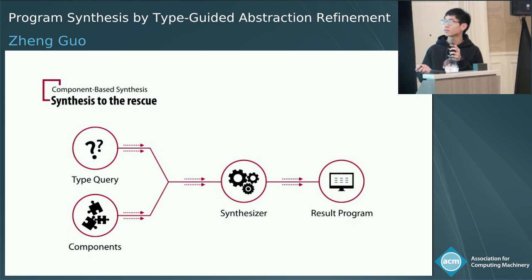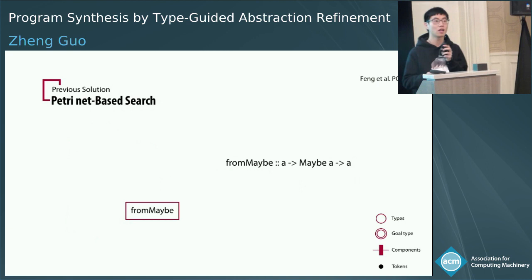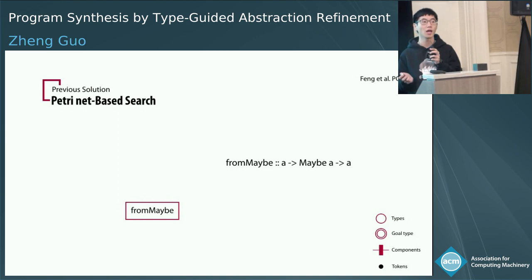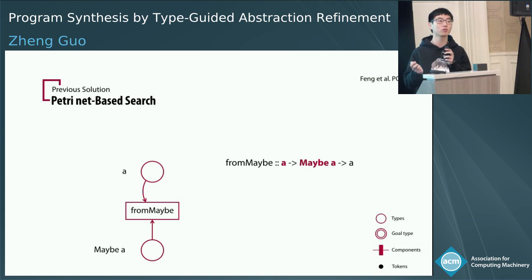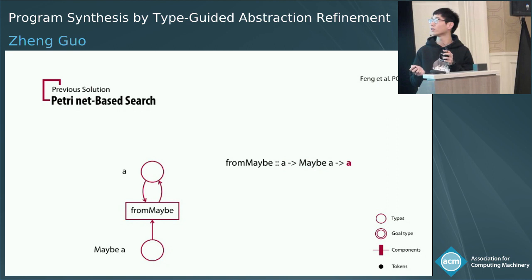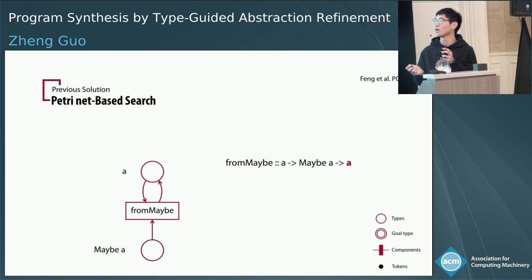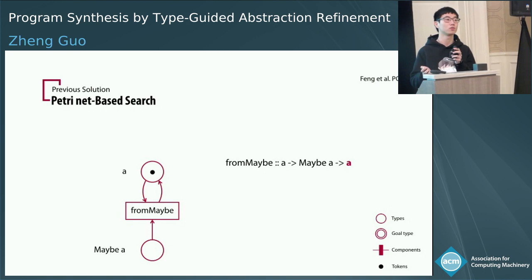SciPad uses a special graph called a Petri Net to represent its search space. Let me introduce how we construct a Petri Net from the component set. Suppose you have a component named fromMaybe with type signature A to maybe A to A. Each component is a transition in the Petri Net — fromMaybe here is a transition. For its argument types, we build a new node for each type; these nodes are called places. We connect these places to the transition with incoming edges, and for the return type we connect an outgoing edge from the transition to the type. Each place in the Petri Net will have zero or more tokens in it.